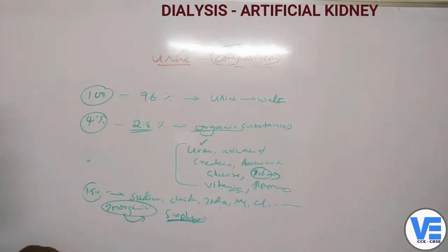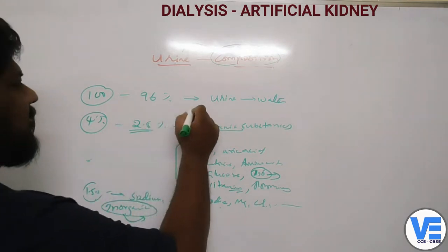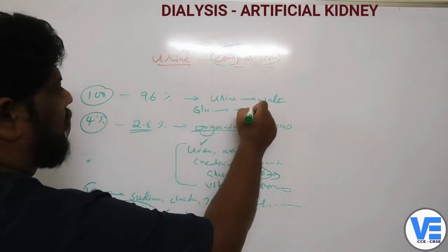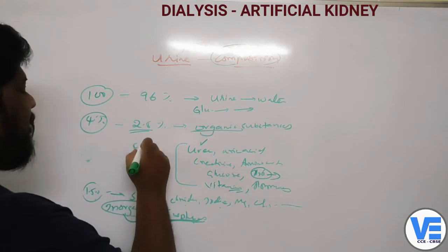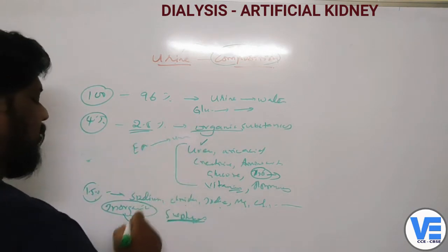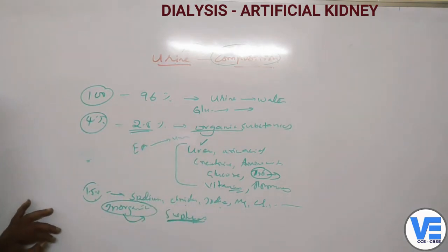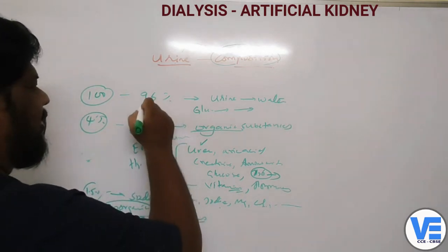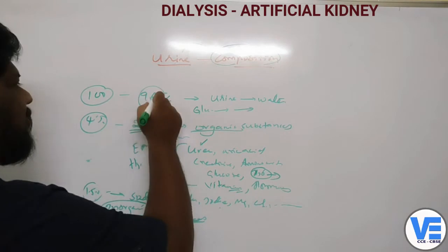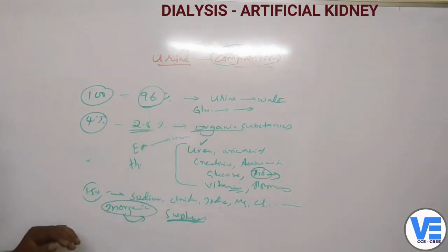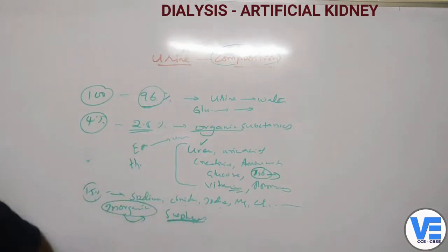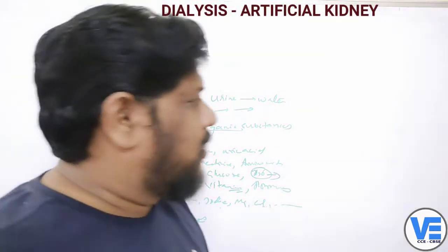This composition will usually differ. When there is excess glucose taken, it comes out in the urine. If excess proteins are taken, it comes out as urea. If excess water is taken, the water content in the urine will be very high — so the 96% may be a bit more. That is how you can talk about the urine composition.